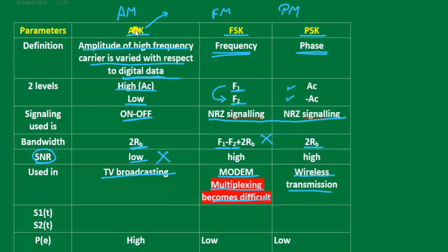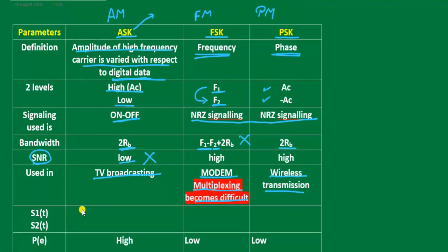The disadvantage of ASK is high probability of error and low signal-to-noise ratio, hence it is not preferred. The disadvantage of FSK is that more bandwidth is required, and the theoretical bandwidth is infinite.